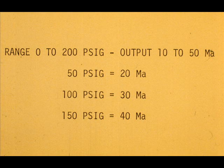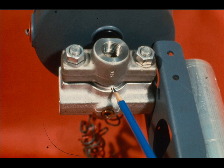Intermediate checks should be made at 50, 100, and 150 PSIG. Next, we have a work request to change the range of our same transmitter — which has the B capsule — to 100 to 400 PSIG.